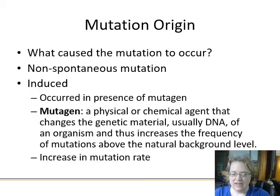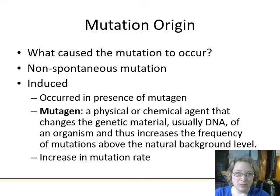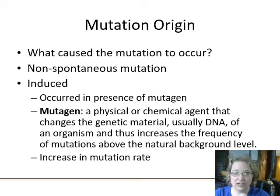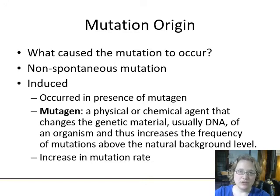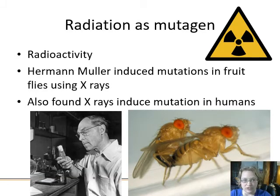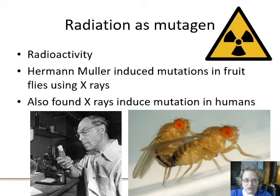If some chemical or toxic substance is changing DNA, we compare mutation rates when exposed versus not exposed to determine if a mutation is induced or spontaneous. If the mutation rate increases in the presence of a noxious chemical, that's an induced mutation occurring in the presence of a mutagen — a physical or chemical agent that changes genetic material and increases the frequency of mutations above the natural background level. Radiation was one of the first confirmed mutagens.